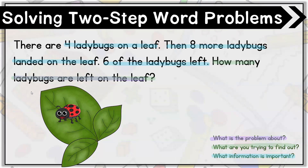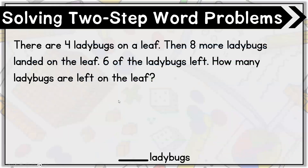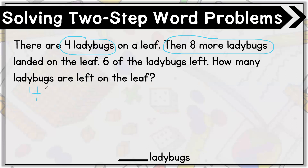Let's go ahead and get started. What should we do first? The first thing I want to do is figure out how many ladybugs were on the leaf. We know that there were four ladybugs on the leaf, and then eight more ladybugs joined them. Eight more ladybugs landed, which means more are joining — our number is going to get bigger, so I am adding. I need to solve four plus eight equals unknown, where the unknown is how many ladybugs are on the leaf.